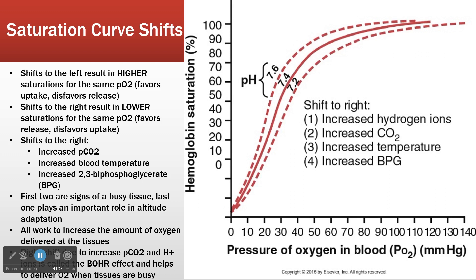Remember: saturation high is holding on, low is releasing — low is dumping. So a shift to the right increases the amount of dumping for a given PO2.